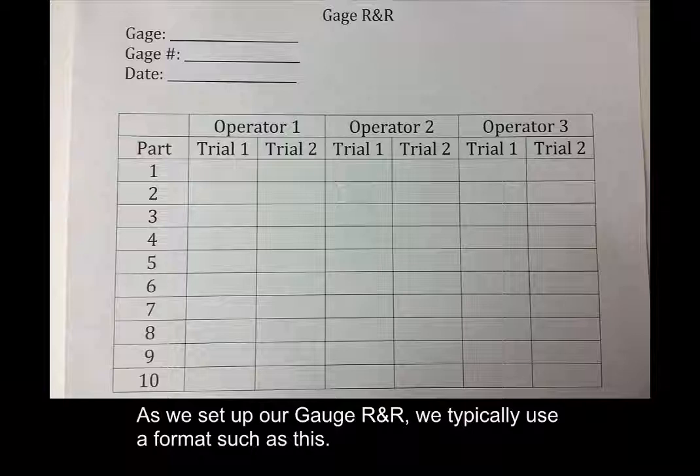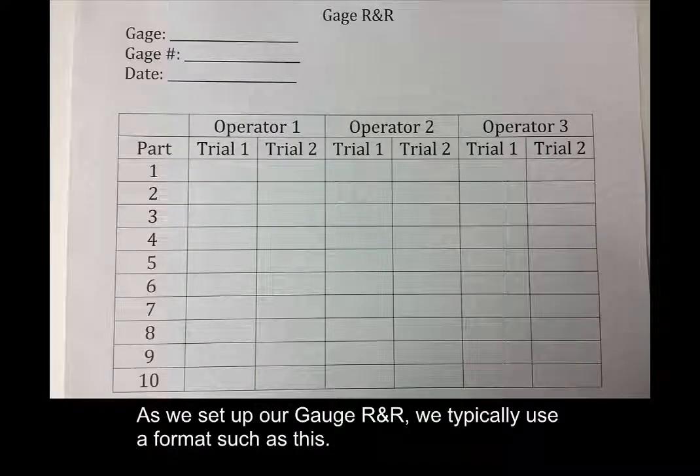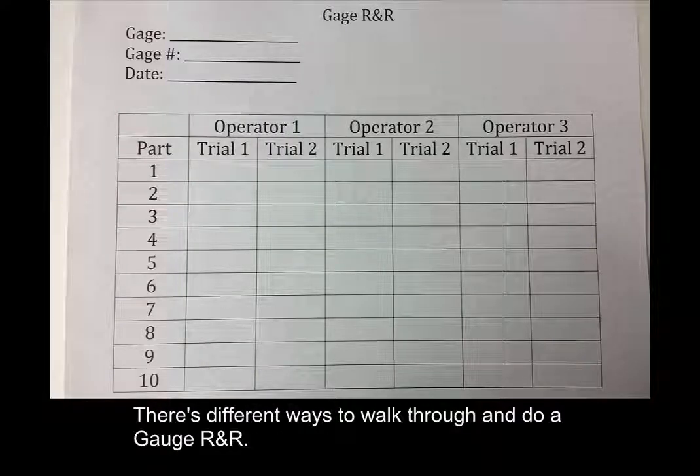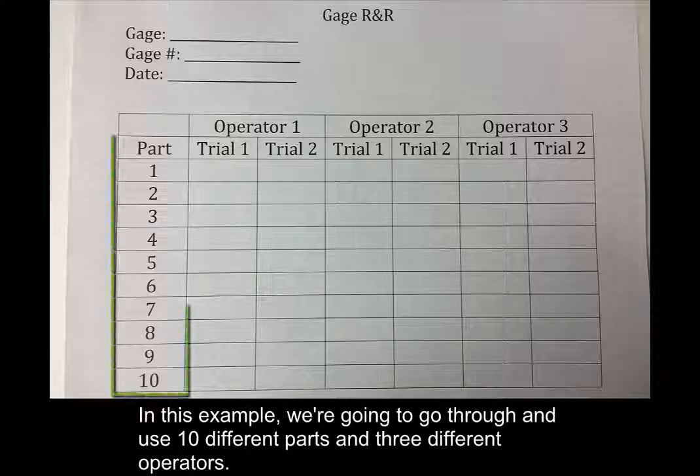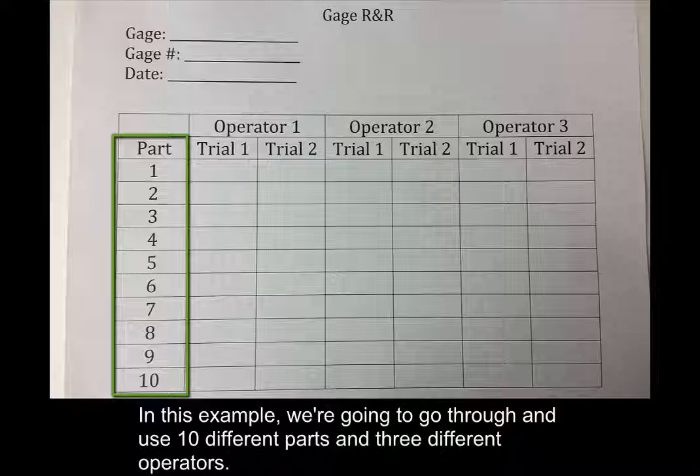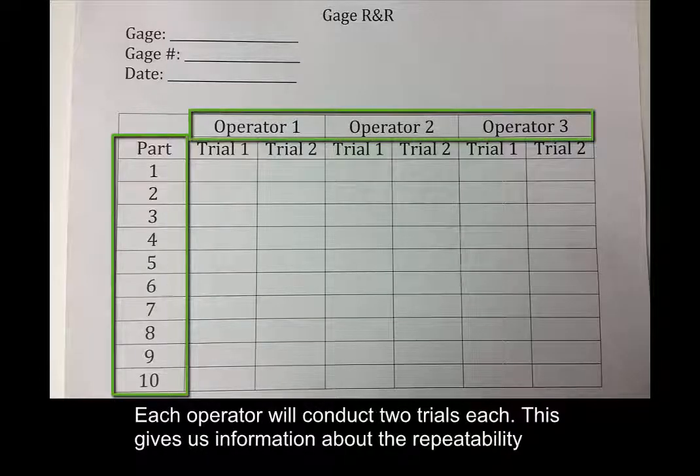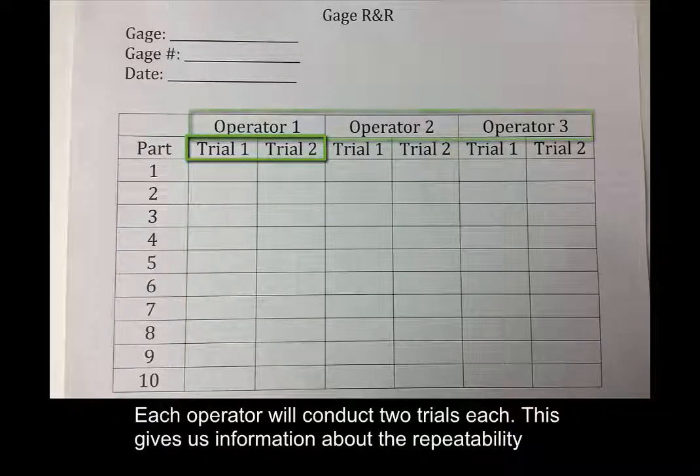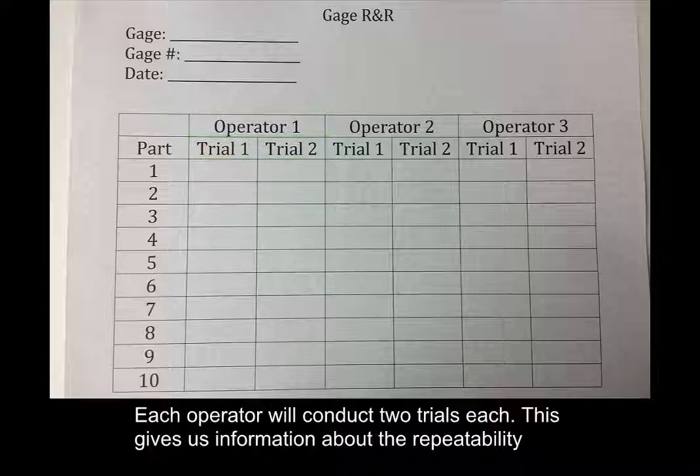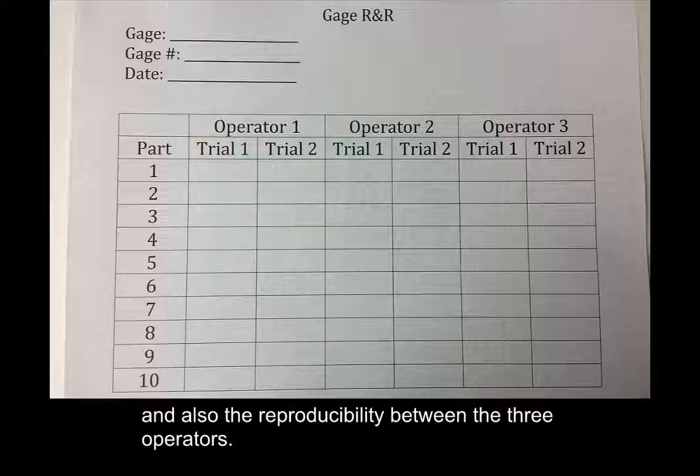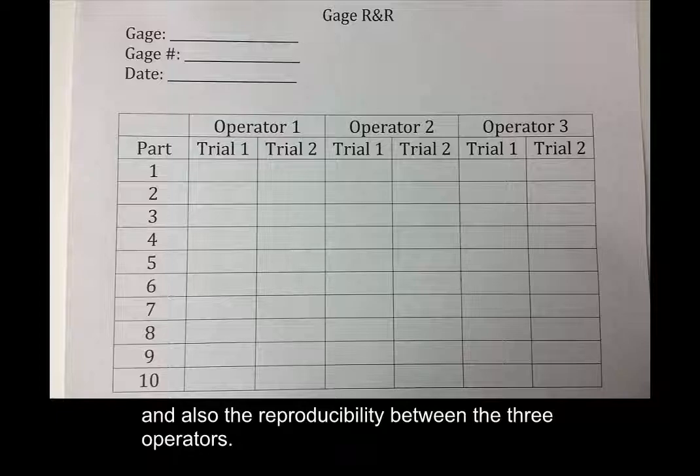As we set up our gauge R&R, we typically use a format such as this. There's different ways to walk through and do a gauge R&R. In this example, we're going to go through and use 10 different parts and 3 different operators. And each operator will conduct 2 trials each. This gives us information about the repeatability and also the reproducibility between the 3 operators.